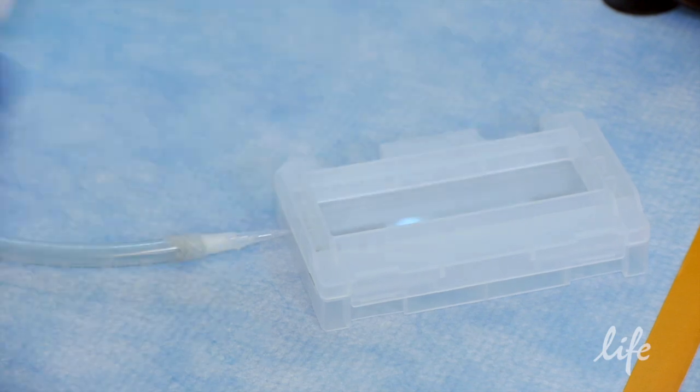Next, prepare the flowchip. Vacuum dry the desired lanes that will be used for sequencing.